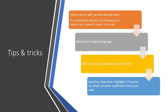What we are really interested in is either a rare case or something with educational value. Very importantly, please do a literature search — just because it's new to you does not mean it's new. We want you to look through the literature to make sure you understand what has preceded your work. Make certain that you revise your case for the English language and get help if you need to. The publication is in English and the grammar and syntax need to be correct. The manuscript should be well-structured, and please highlight two to three learning objectives on what someone could learn from your case.